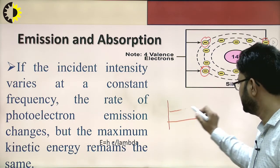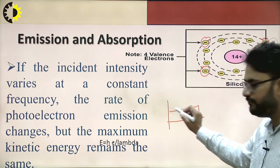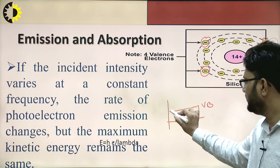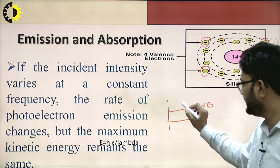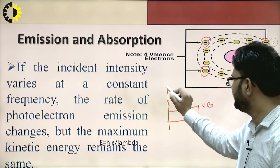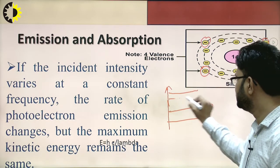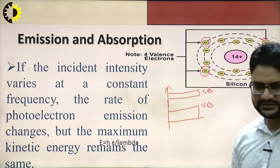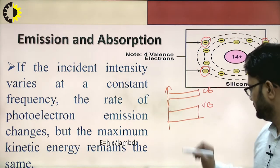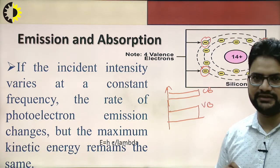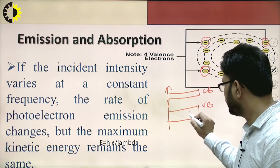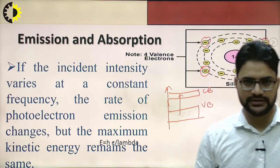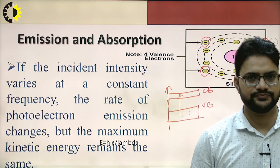If we consider the upper level of the lower energy band as the valence band, and the higher level of the upper energy band as the conduction band — then for silicon, after gaining energy through excitation, the electron moves from the valence band towards the conduction band, contributing towards the conductivity.